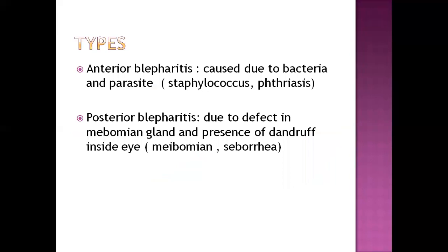Types of blepharitis can be anterior and posterior, according to the anatomical location of signs and symptoms. Anterior blepharitis is caused mainly due to bacteria and parasites — bacteria like Staphylococcus and parasites like Phthirus. Posterior blepharitis can be due to a defect in the meibomian gland and presence of dandruff inside the eye.